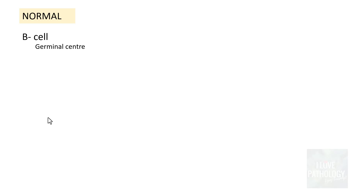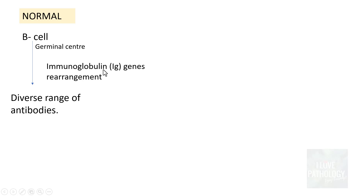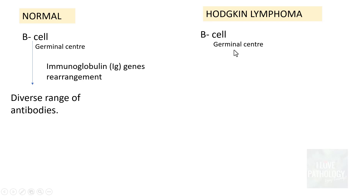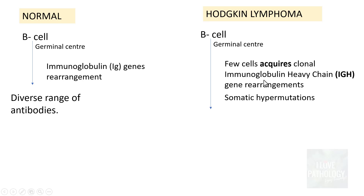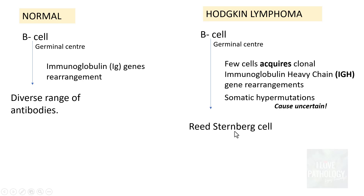To understand pathogenesis, we need to understand what happens in normal B cells in the germinal center. Normally, there is immunoglobulin gene rearrangement in germinal center B cells, which allows them to produce a diverse range of antibodies — this is a normal mechanism. In Hodgkin Lymphoma, some of these germinal center B cells acquire clonal immunoglobulin heavy chain (IGH) gene rearrangements — this is an abnormal clonal IGH gene rearrangement occurring along with somatic hypermutation.